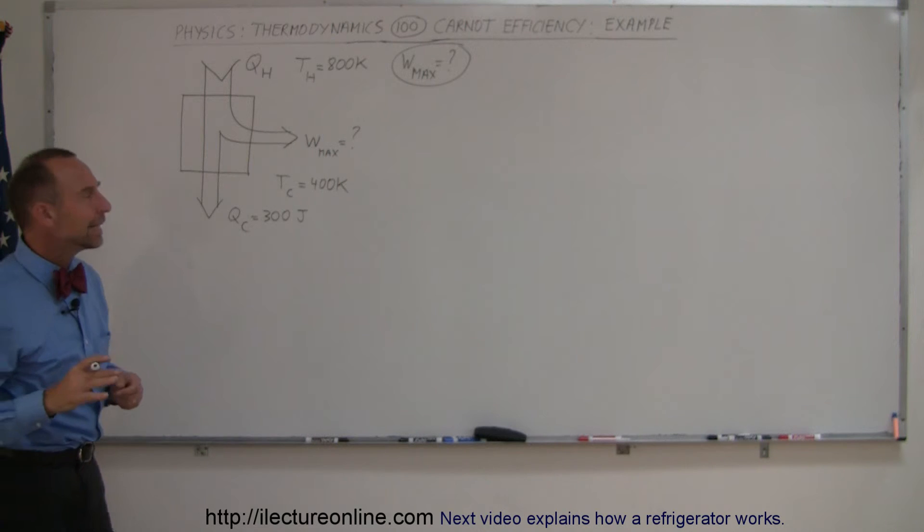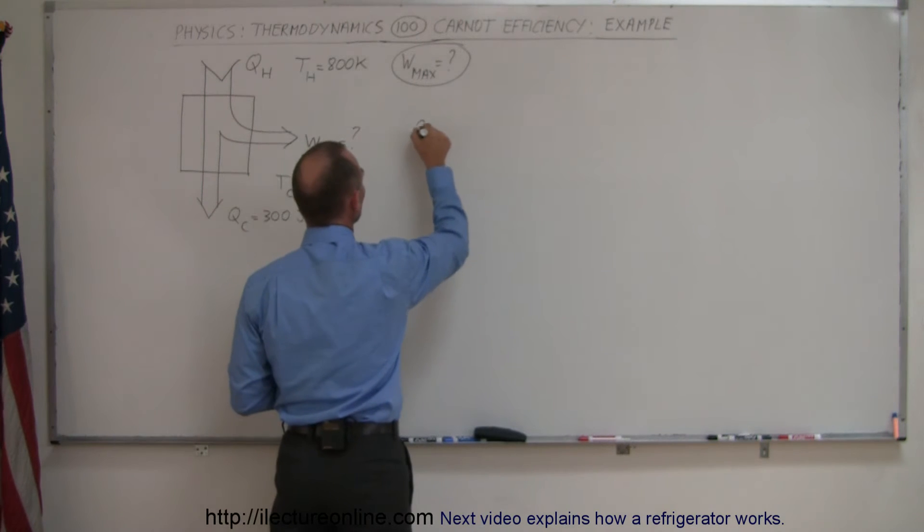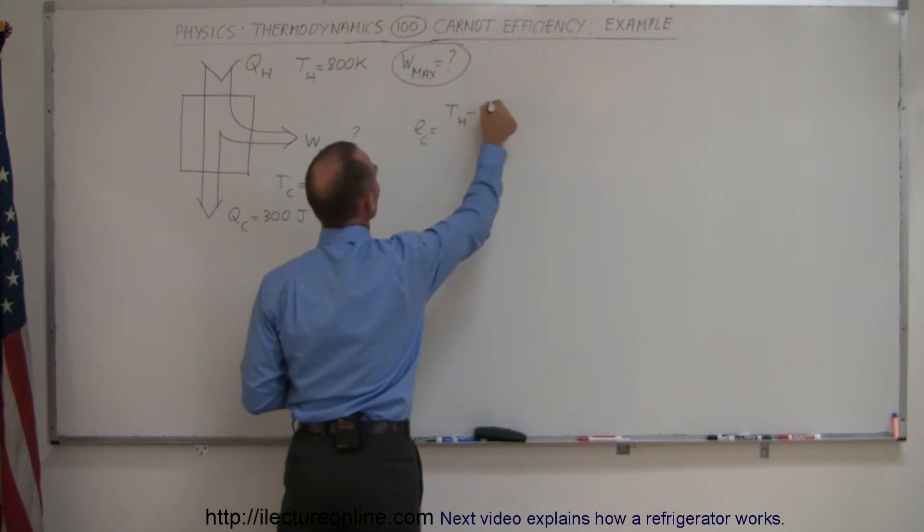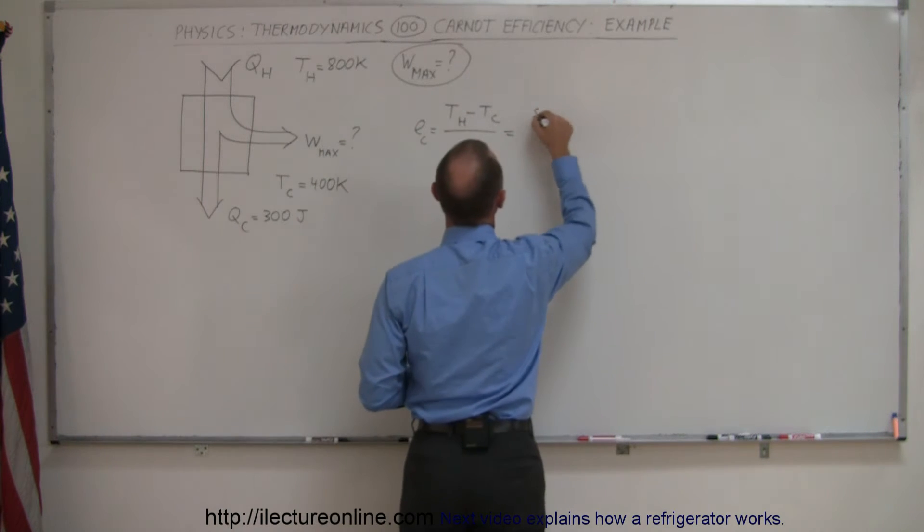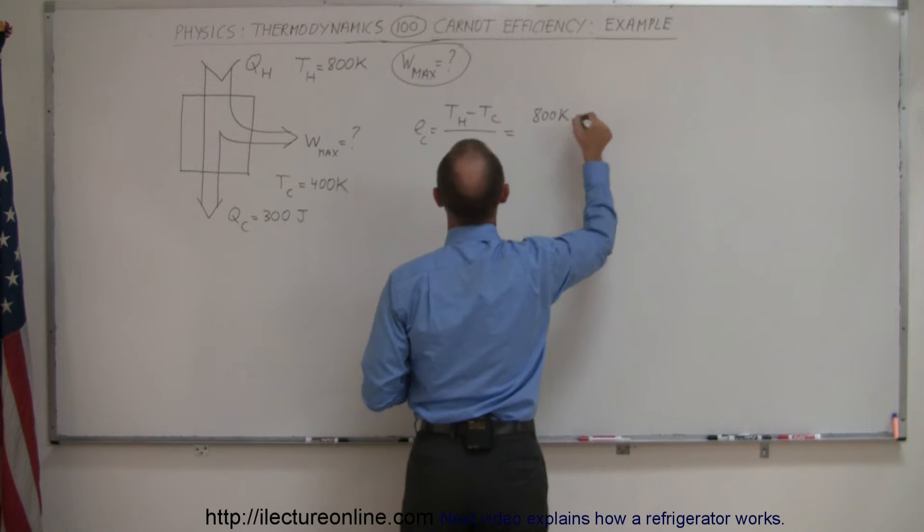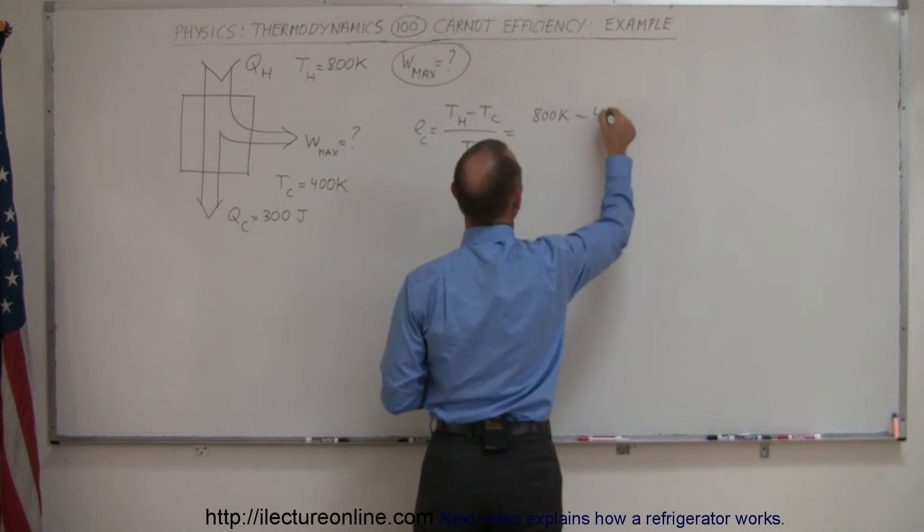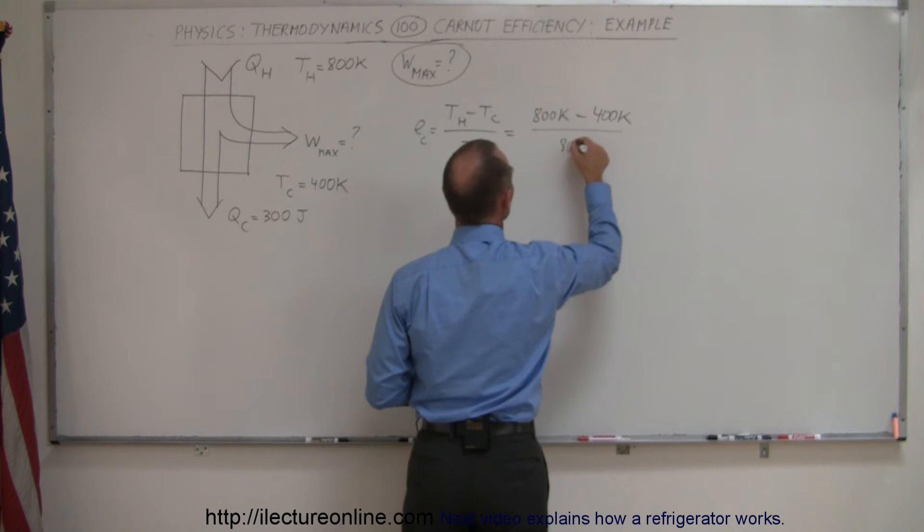So first let's calculate the Carnot efficiency. E sub C is equal to T hot minus T cold divided by T hot, and so that would be equal to 800 Kelvin minus T cold which is 400 Kelvin divided by 800 Kelvin.